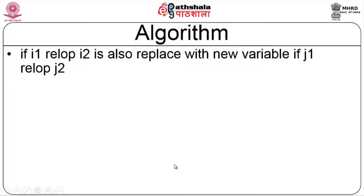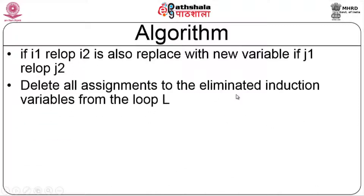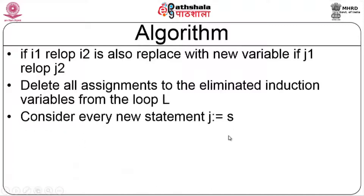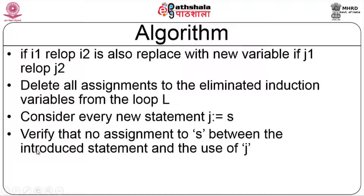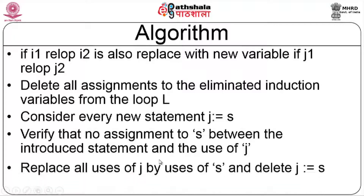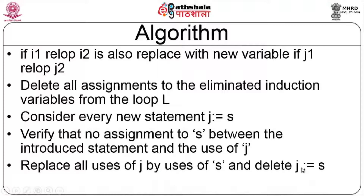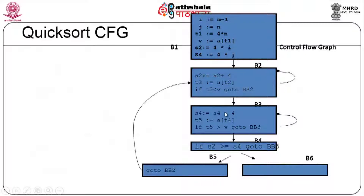The algorithm takes some induction variable j in i's family with triple (i, c, d) and modifies each test where i appears to use j instead. If c is positive, the test 'if i relop x goto b' is converted using r = c*x, r = r + d, and then 'if j relop r goto b'. For two induction variables i1 and i2, new variables j1 and j2 are computed, assignments to the eliminated induction variables are deleted, and all uses of j are replaced by s, then j = s is deleted.